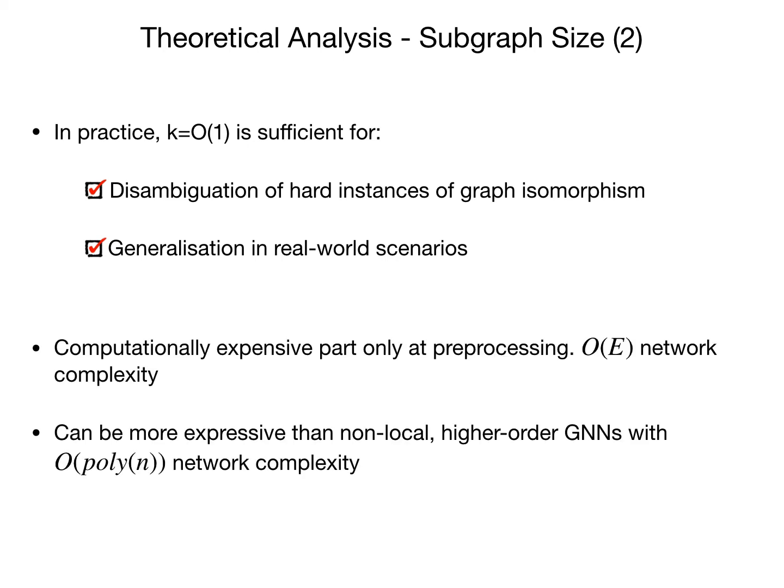It's important to note that GSN doesn't sacrifice computational complexity since it is still linear in the number of edges, as with traditional MPNNs — in contrast with higher-order GNNs that are polynomial in the number of nodes.